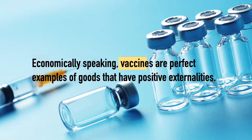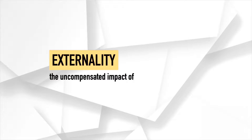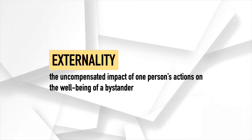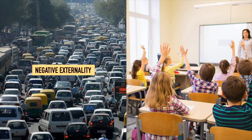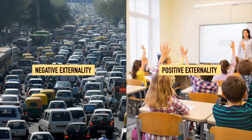Economically speaking, vaccines are perfect examples of goods that have positive externalities. An externality is the uncompensated impact of one person's actions on the well-being of a bystander. If the impact on the bystander is adverse, it is called a negative externality. The release of pollutants into the air is a negative externality, as self-interested firms do not consider the impact of these pollutants on society in the process of production. On the other hand, if the impact on the bystander is beneficial, it is called a positive externality.